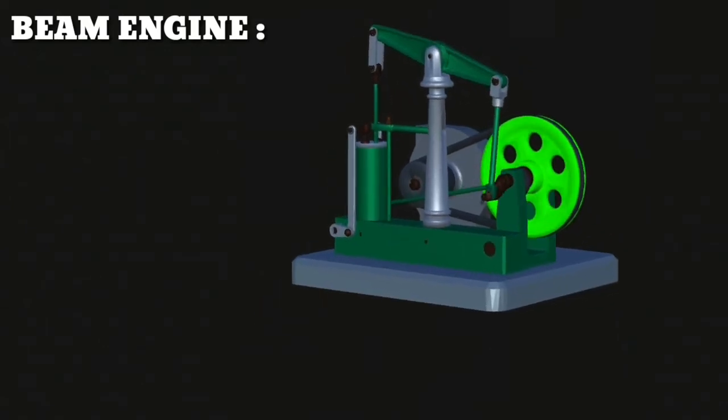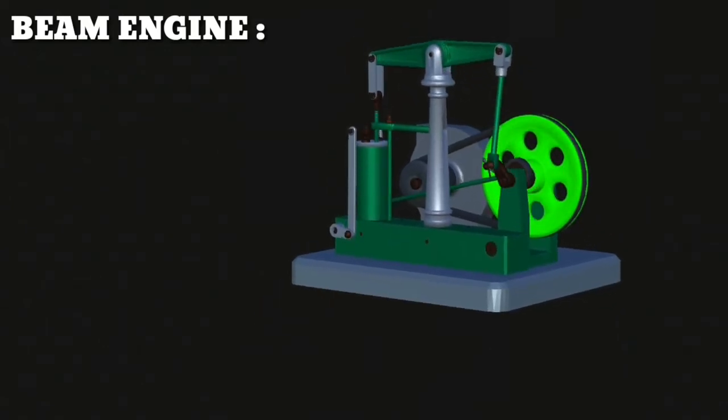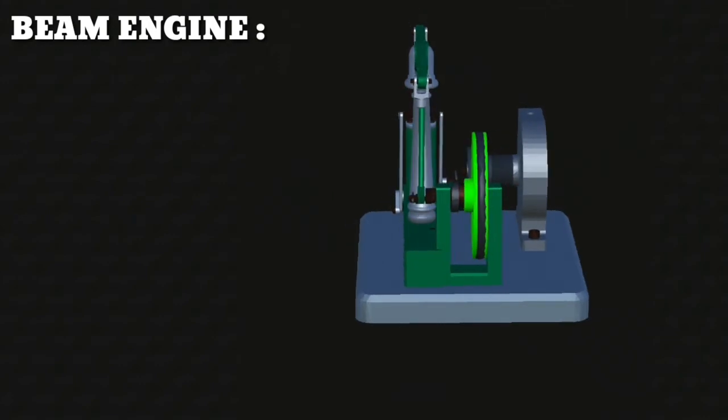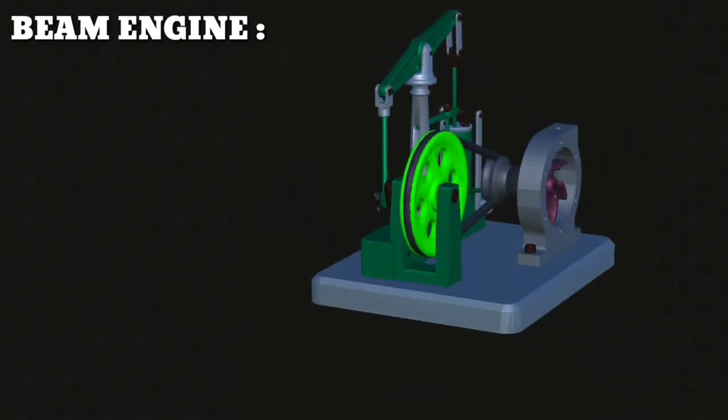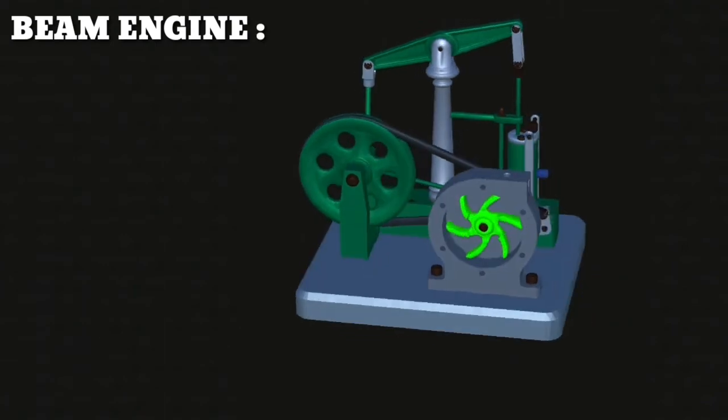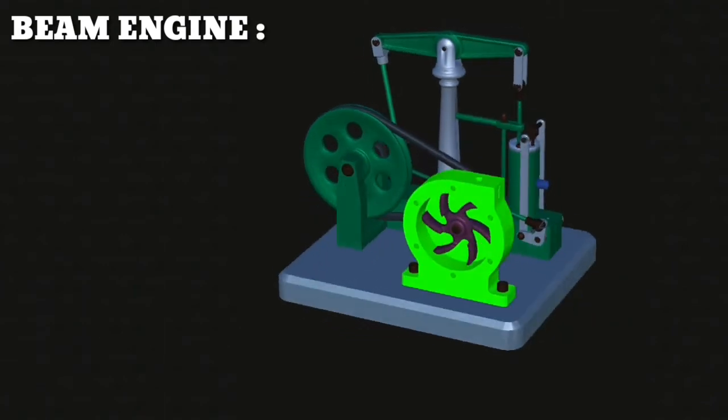The other end of the connecting rod is linked to one end of a lever. The lever is pivoted at a point. The other end of the lever is attached to a piston cylinder mechanism as shown.